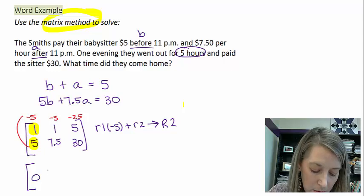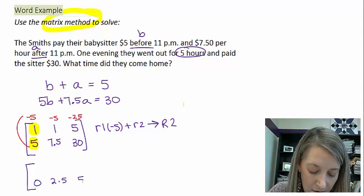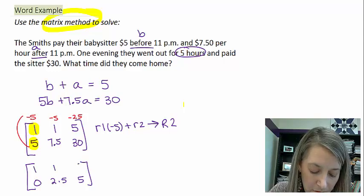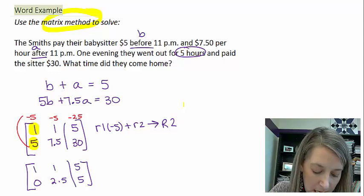Gives me 0, 2.5, and 5 for my second row. Of course, my first row stays the same.